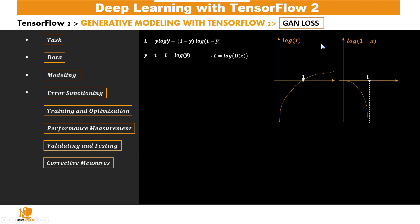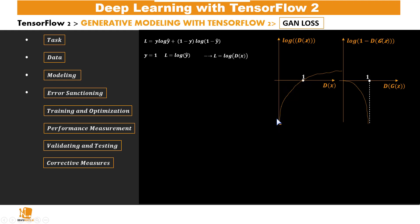Looking at the log function: when our input data is real, our aim is that the discriminator should output a 1, and log(1) = 0. When this loss is zero we are at the maximum value, where L = 0. Since D(x) lies between 0 and 1, the maximum possible value for log D(x) is zero. So the aim here is to maximize log D(x), which is achieved when D(x) = 1.